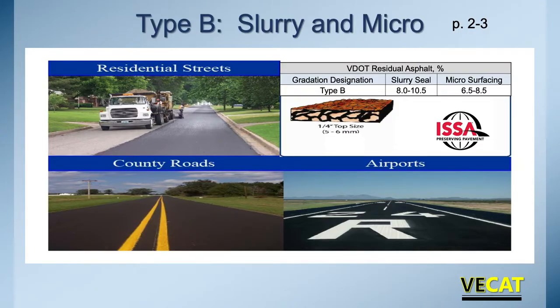Type B slurry and micro is the type of material you see more of. It's generally used in residential streets as well. It fills in the surface voids better, takes care of raveling issues better, and gives you a thicker wearing surface so you get a longer life out of it. It can also be used on two-lane roads and has been used on airports with great success.